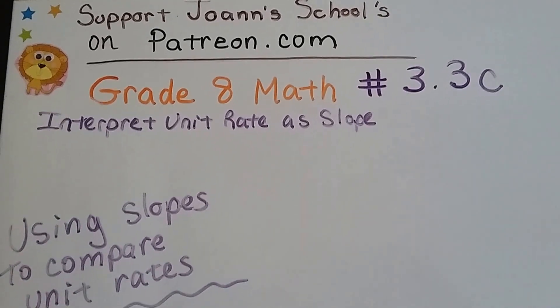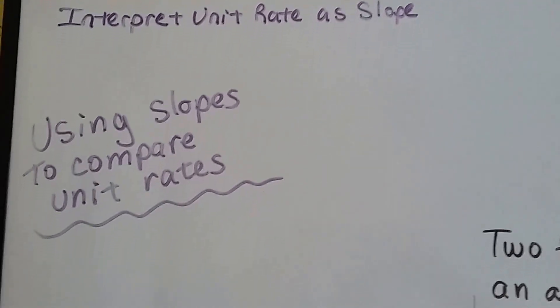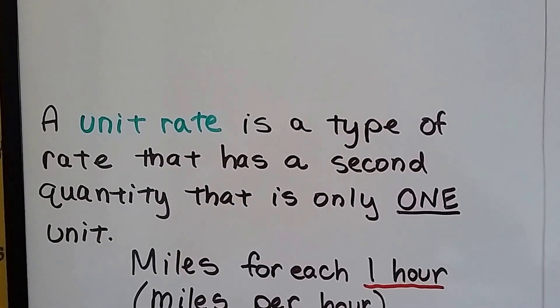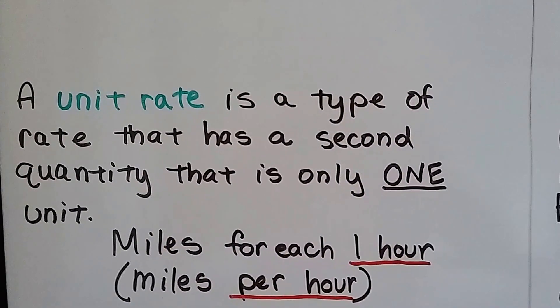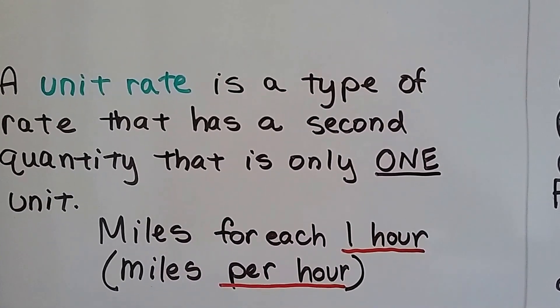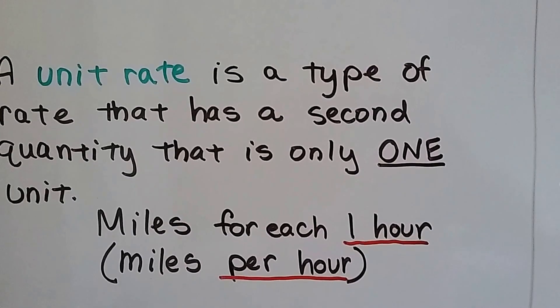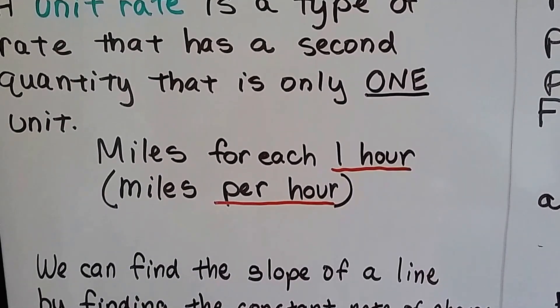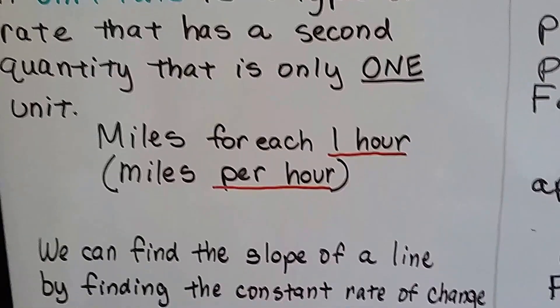Grade 8 math number 3.3c, using slopes to compare unit rates. We've said before in 7th grade, and even in this playlist, that a unit rate is a type of rate that has a second quantity that is only one unit, like miles for each one hour, miles per hour. That's a unit rate.